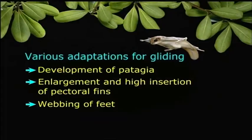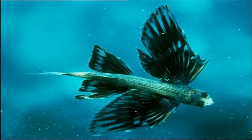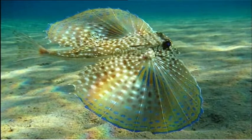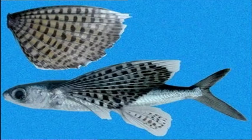Among mammals, the flying squirrel has a highly developed patagium. Flying fishes, i.e., Exocoetus, are trim-built creatures with large parachute-like pectoral fins which are highly inserted on the body. Exocoetus can fly up to 200 to 300 meters to escape from larger fishes.